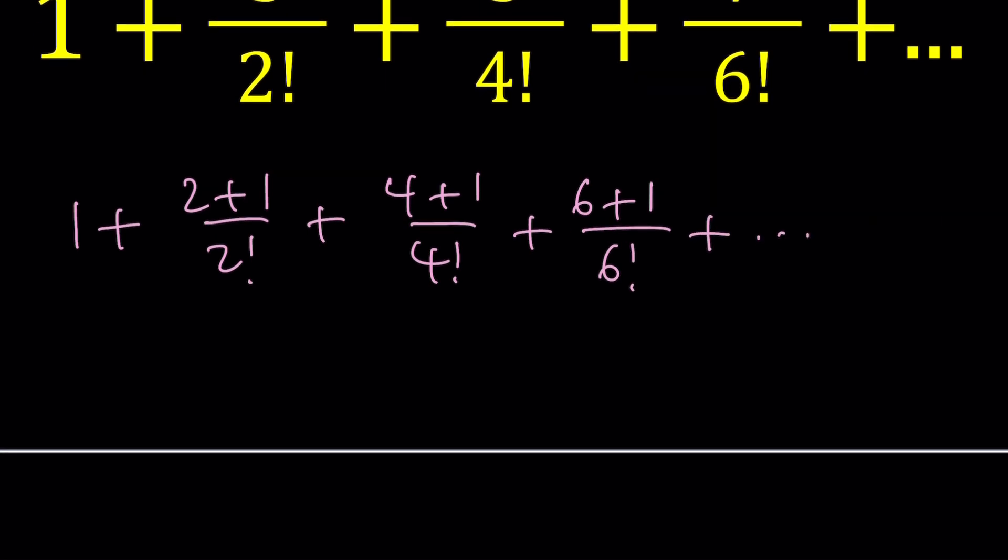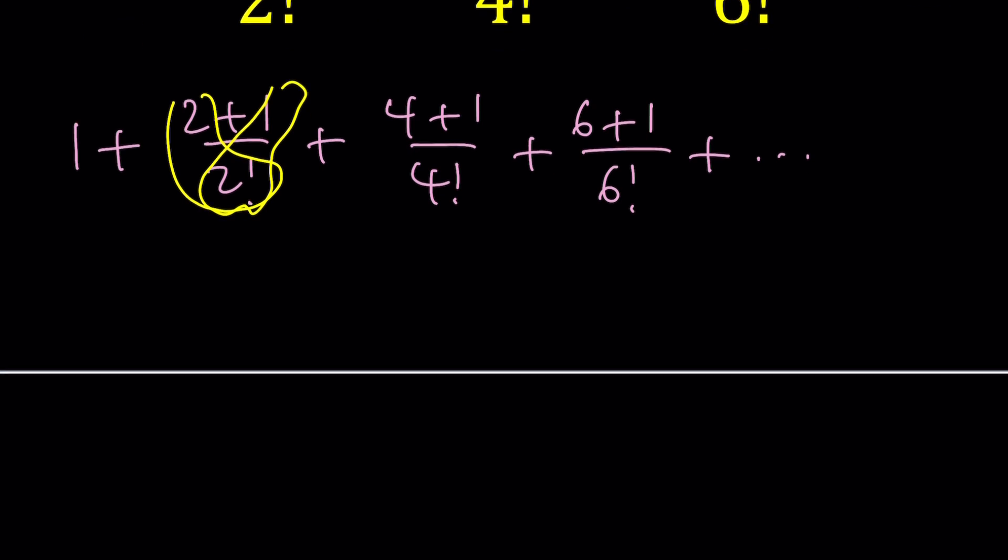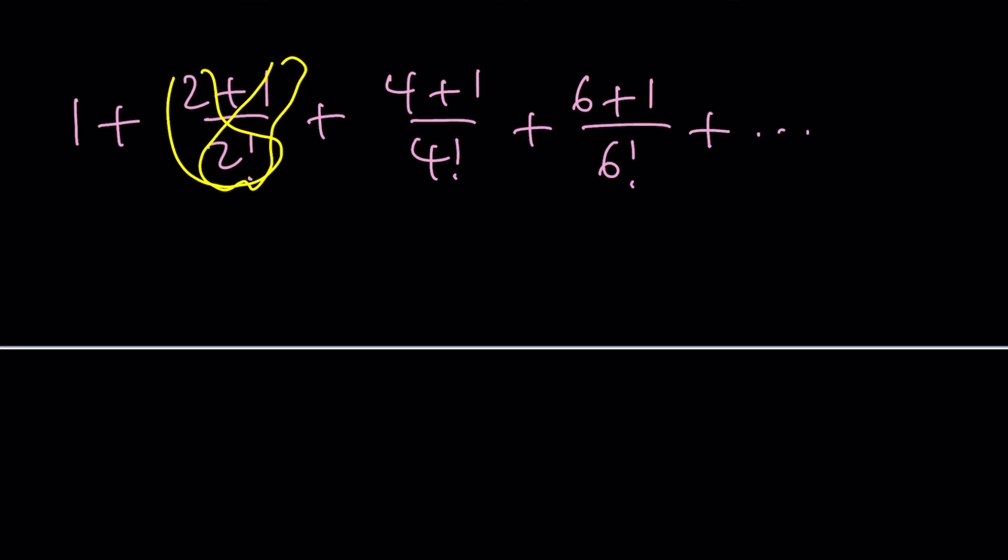And then we can go ahead and separate this into two sums. This one plus this one. Make sense?